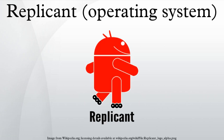In March 2014, Replicant developers found and closed a backdoor present in a wide range of Samsung Galaxy products that allows the baseband processor to read and write the device's storage, sometimes with normal user privileges and sometimes as the root user, depending on device model. It is unknown whether Samsung's proprietary firmware for the radio chip can be remotely instructed to use these access features, and whether the vulnerability was introduced with legitimate uses in mind.